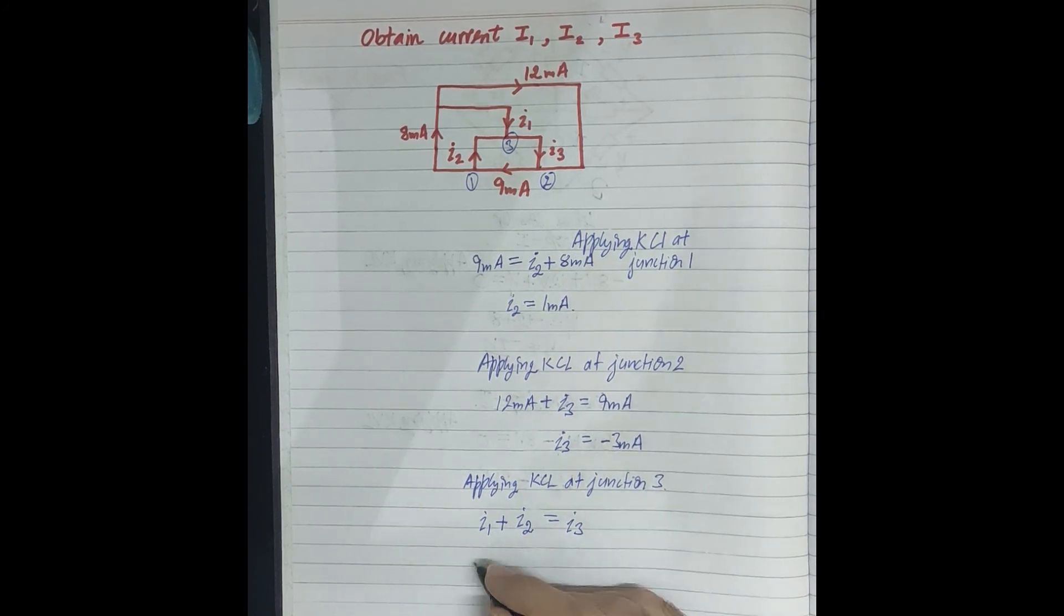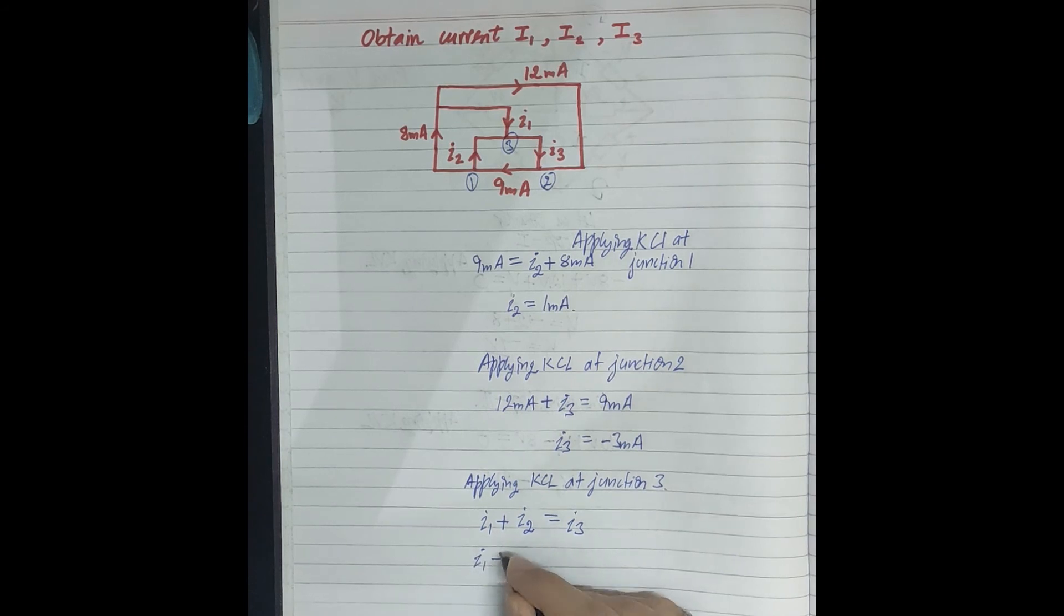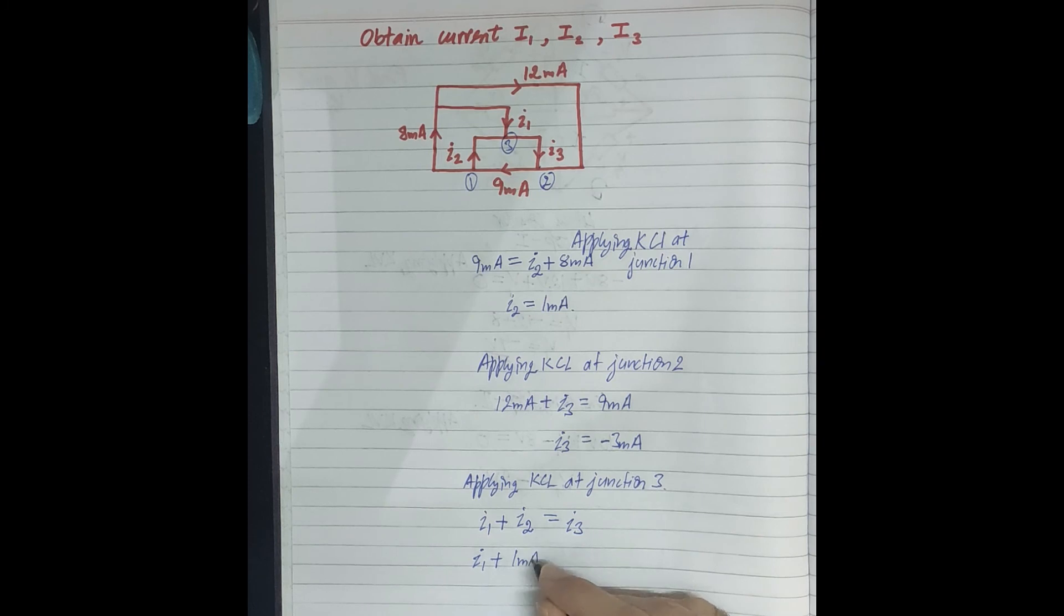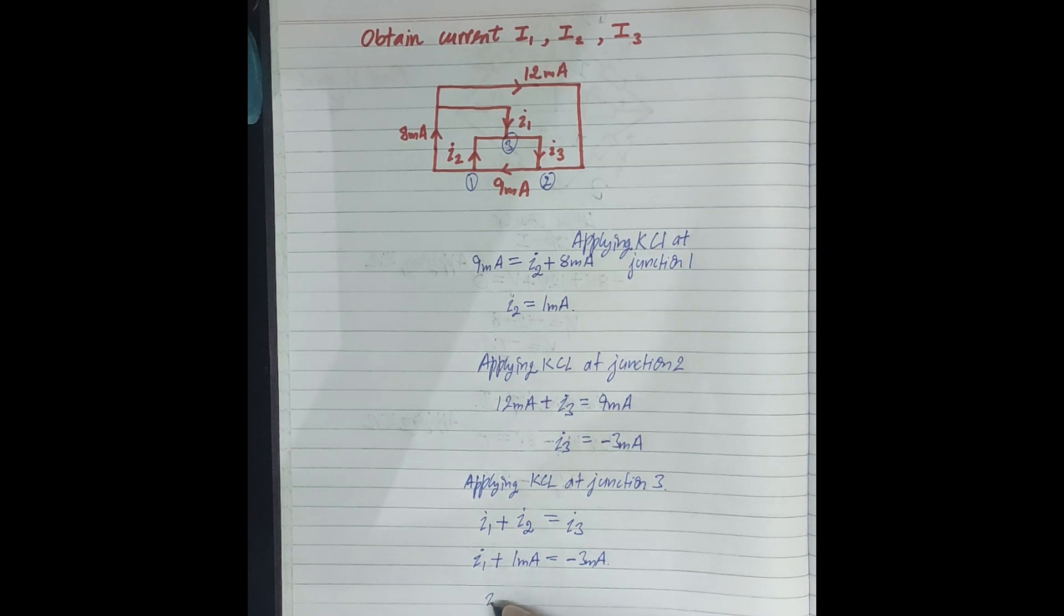I2 and I1 are incoming and I3 is outgoing current. So we substitute: I1 plus I2 equals I3, which is minus 3 mA. From here, I1 equals minus 3 minus 1, which is minus 4 mA.